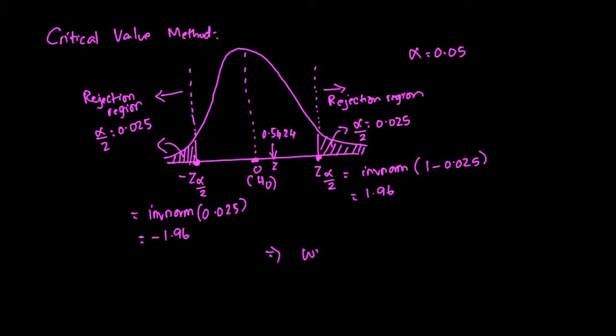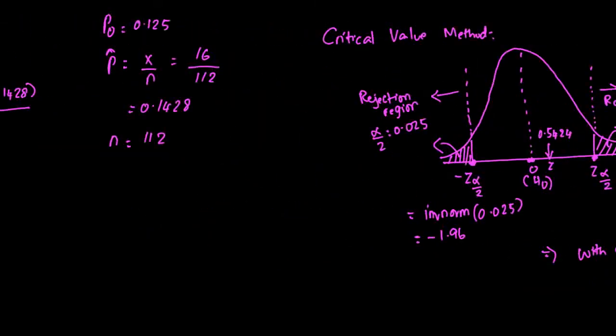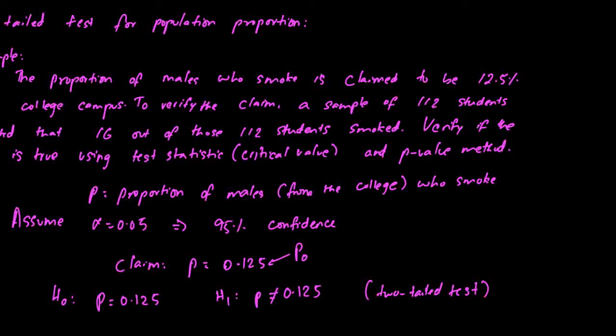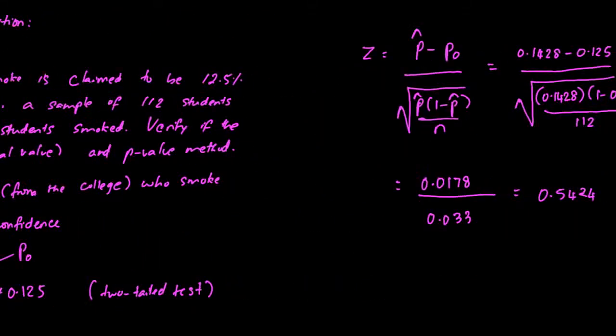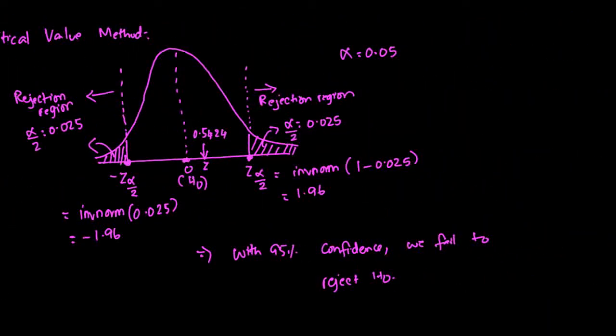Therefore, with 95% confidence, we fail to reject the null. If you go back and observe the null, the null is that the proportion is exactly equal to 0.125. Therefore, the statement here that we agree with is P equals 0.125. We claim that the proportion of students who smoke on this particular campus is 12.5%, and we found that the claim is true. That is the critical value method or the test statistic method.